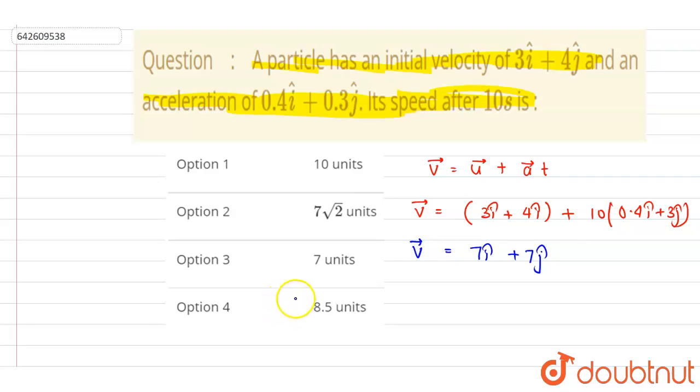Now I will write down under root of 7 squared plus 7 squared, which equals 7 root 2 units. This will be the speed.